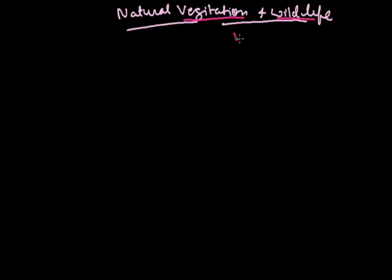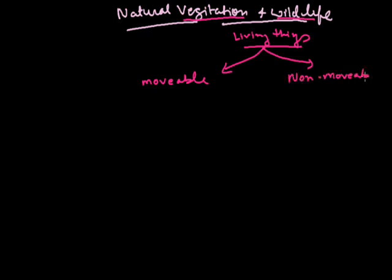What is vegetation and wildlife? Actually, living things in the world are of two types. The first one is movable, which can move from one place to another place, and the second one is non-movable, which cannot move from one place to another place. These movable living things are called wildlife, while the non-movable are the trees, plants, etc., also known as vegetation.